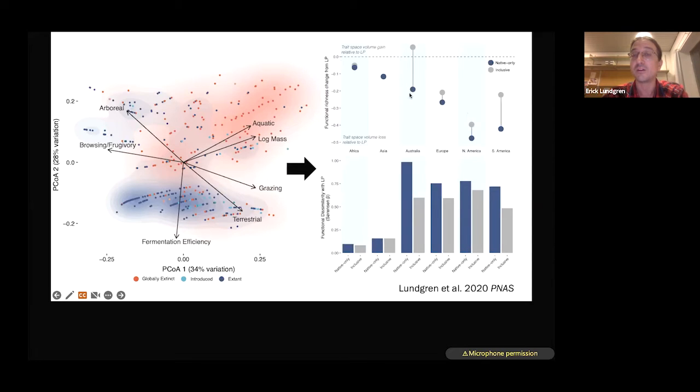The one on the top here is showing functional richness, the diversity of traits in a system relative to the late Pleistocene before things went extinct 12 to 40,000 years ago. The blue are if we only look at native continental assemblages of animals. The gray are when we include animals like wild donkeys, which are otherwise not considered biodiversity. These animals are thought of as invisible in our assessments of biodiversity trends. You can see that the blue points are all significantly lower than this dash line of where the late Pleistocene was. The gray points increase this dramatically in some places, especially in Australia, as well as South America, where introduced animals are actually restoring lost traits.